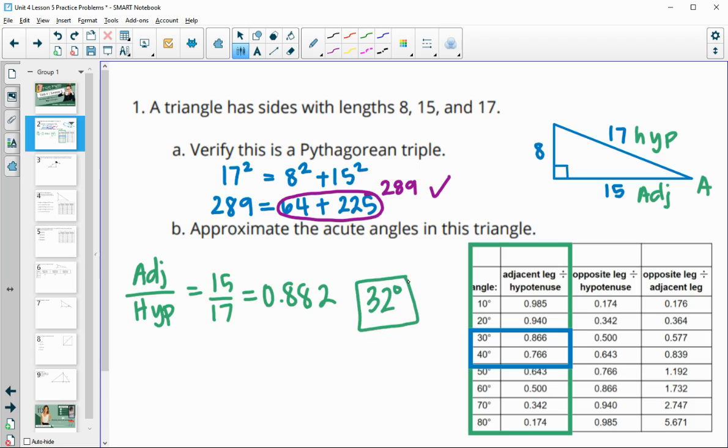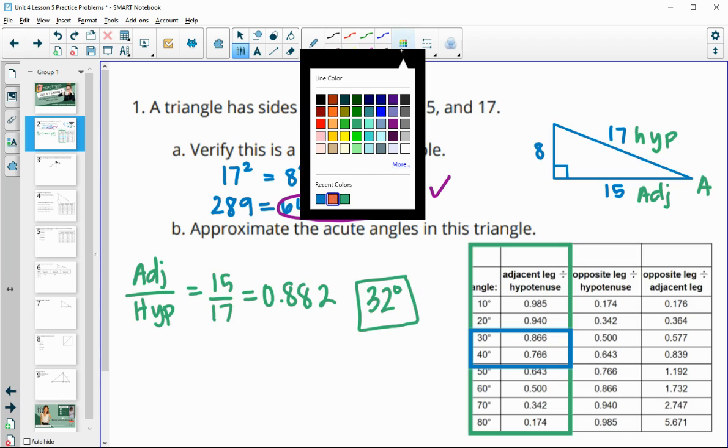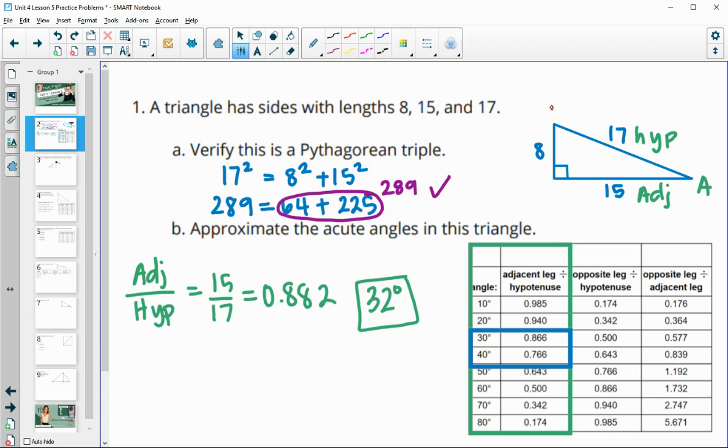Remember, you're just guessing, so you can be around there, 32, 33, 34, something like that. Then when we go to find the other angle, remember that these two angles total 90 degrees, so I'll just do 90 minus 32, and that's going to give me 58 degrees for the approximation of the other angle.